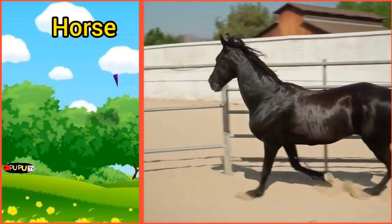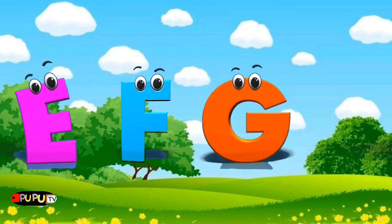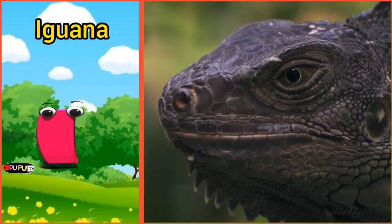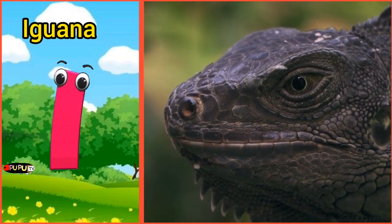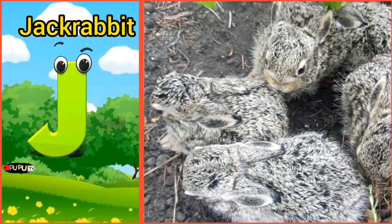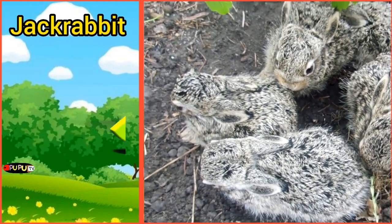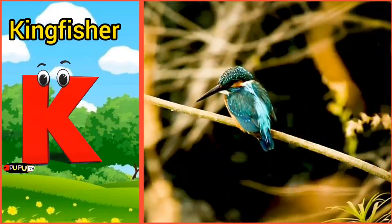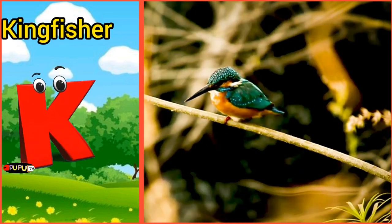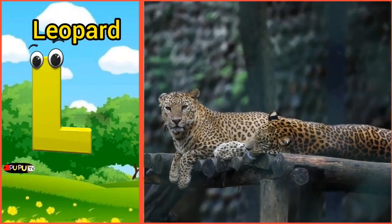I is for Iguana. I, Iguana. J is for Jackrabbit. J, Jackrabbit. K is for Kingfisher. K, Kingfisher. L is for Leopard. L, Leopard.